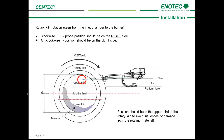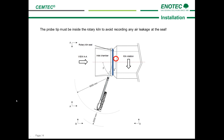The best sampling technology won't help achieve the desired results if the probe is not installed in the right position. As you can see in this drawing, the kiln rotates clockwise when seen from the inlet chamber to the burner — in this case the probe needs to be installed on the right side. If it were to rotate anti-clockwise, we would recommend an installation on the left. Furthermore, the probe must be positioned in the upper third of the kiln in order to avoid influences or damage from the rotating material. It's also extremely important that the probe tip is inside the rotary kiln after the kiln seal, otherwise false air will be measured.